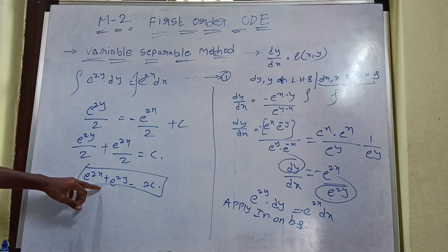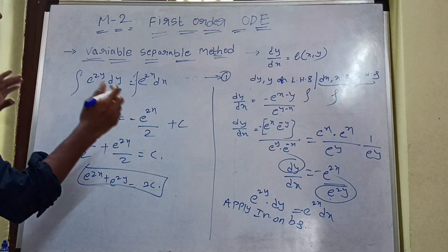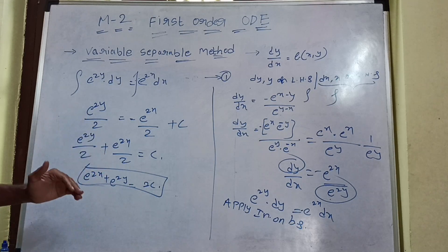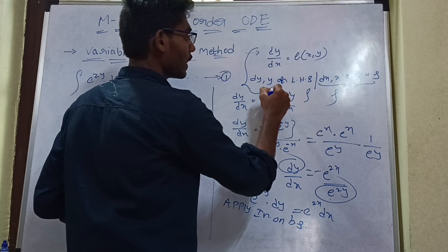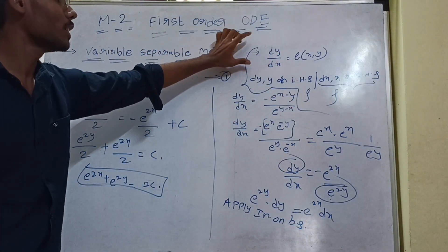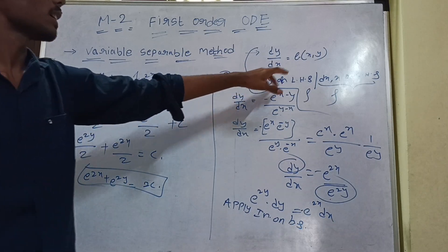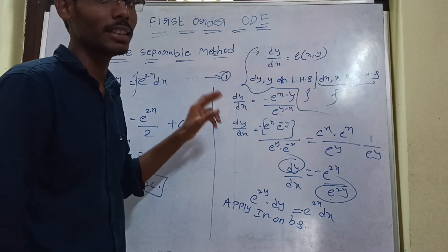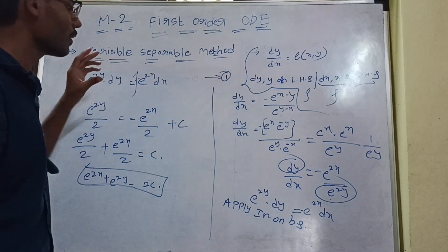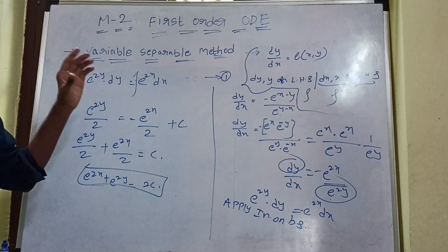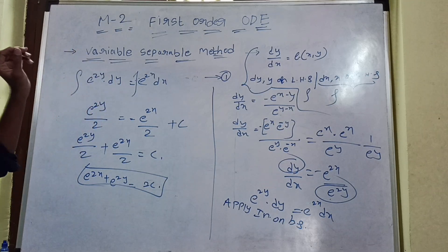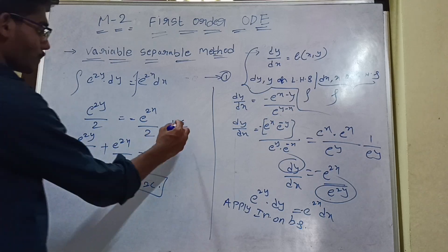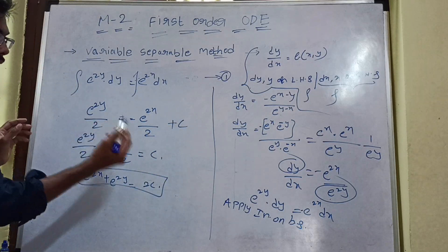So that is the solution. The main steps are: first, identify the form dy/dx = f(x, y); second, separate variables with y and dy on LHS, x and dx on RHS; third, apply integration using general formulas; and finally, solve to get the general solution.